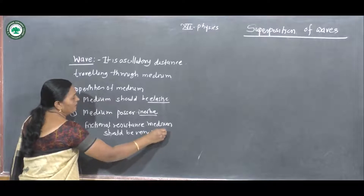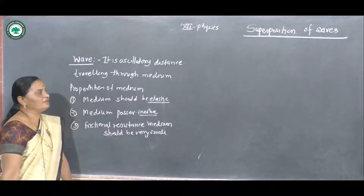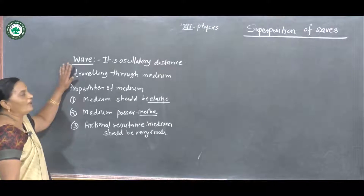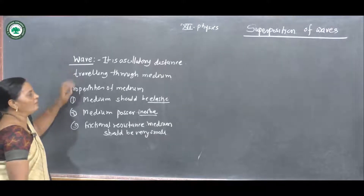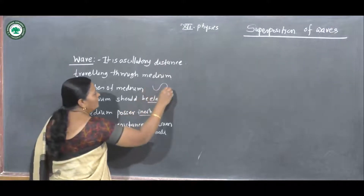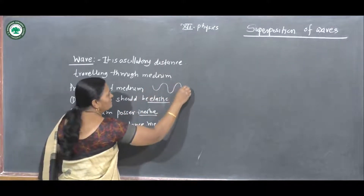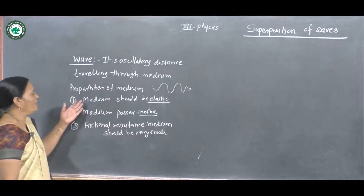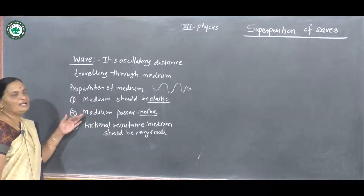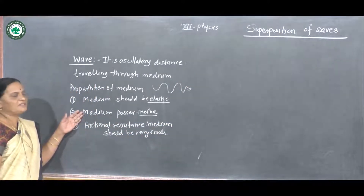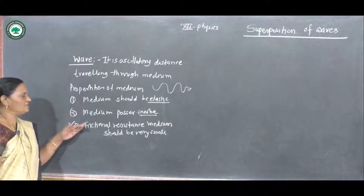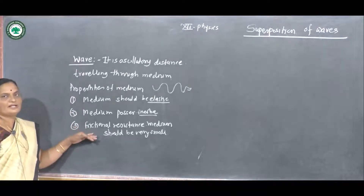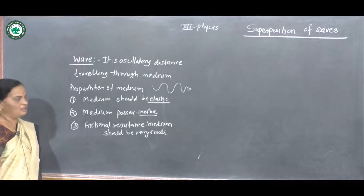That is, there is no loss of energy. So the wave is an oscillatory disturbance travelling through medium. Medium should be elastic, medium should possess inertia, and frictional resistance of the medium should be very small.